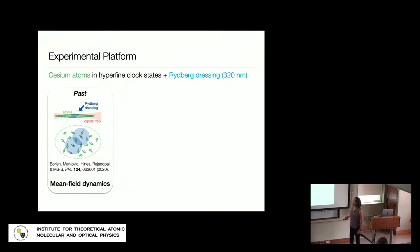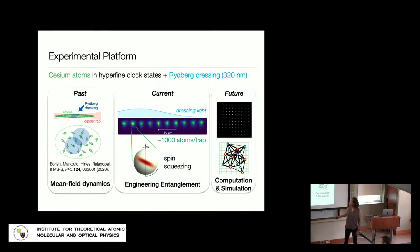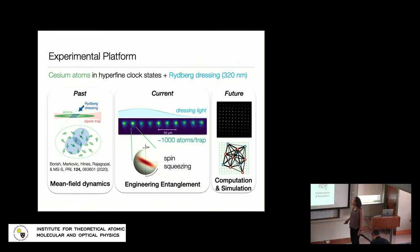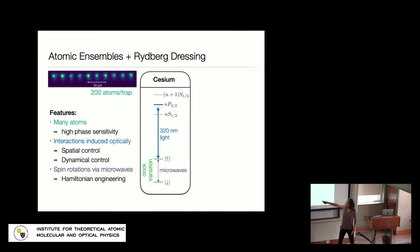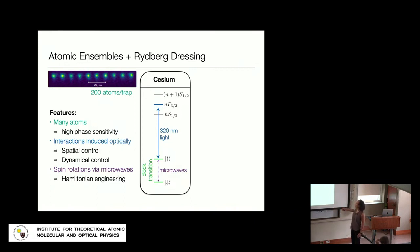Our experimental platform touches on three different regimes. I'll focus on experiments working with an array of clouds of a few hundred atoms each, and also touch on past work looking at mean-field interactions in a bulk gas, and mention directions in computation and simulation in tweezer arrays. In the current platform, we have an array of about 10 ensembles, each with 200 atoms — having this gas of many atoms is nice for high phase sensitivity even without entanglement. The dressing gives optical control of interactions, including spatial and dynamical control, and spin rotations are achieved via microwave coupling on the clock transition of cesium.